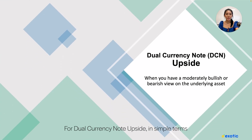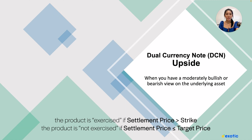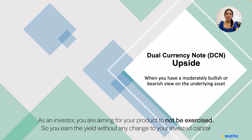The dual currency note upside: in simple terms, this means that if the settlement price is above the strike, the product is exercised. The product is exercised if settlement price is greater than the strike, and not exercised if settlement price is less than or equal to the target price. As an investor, you are aiming for your product to not be exercised, so you earn the yield without any change to your invested capital.